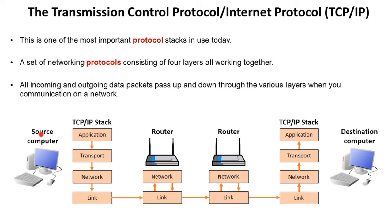Here we have a source computer that wants to send communication to this destination computer. On the way out it travels down through the TCP/IP stack with the various rules of each layer being applied one at a time. Once it reaches the link layer it gets sent on to the first router, where it moves up to the network layer and down through any other routers that are required. When it reaches the destination computer it travels back up through the protocol stack.